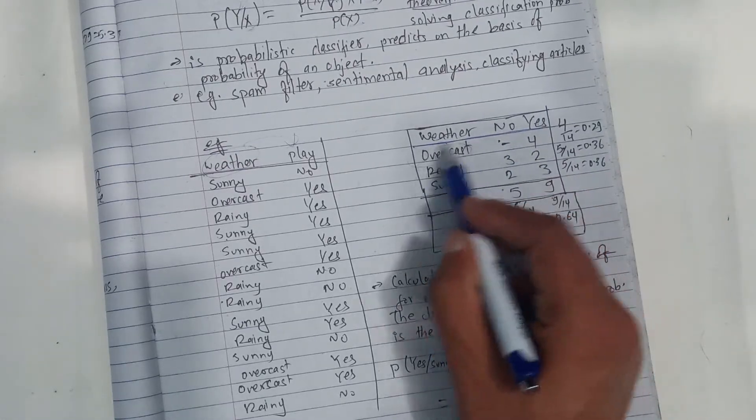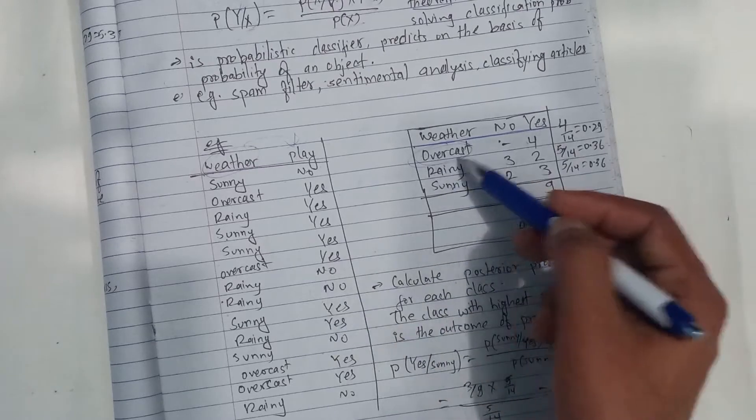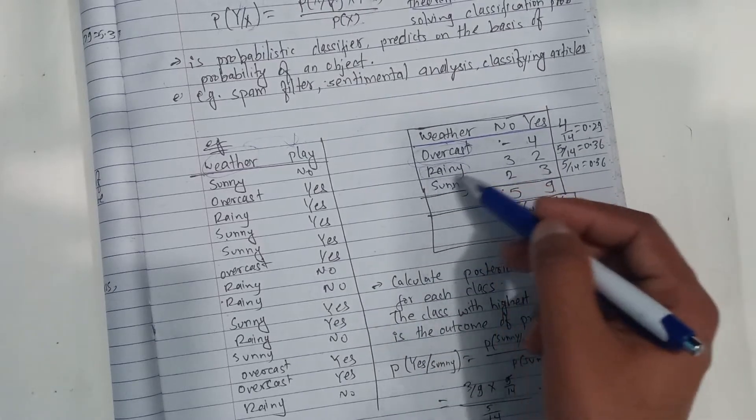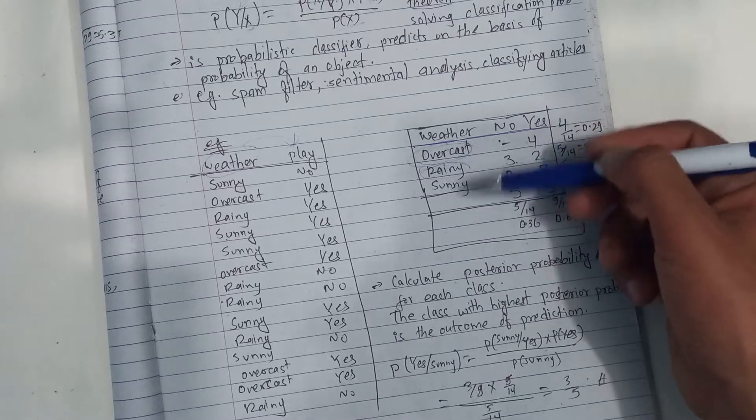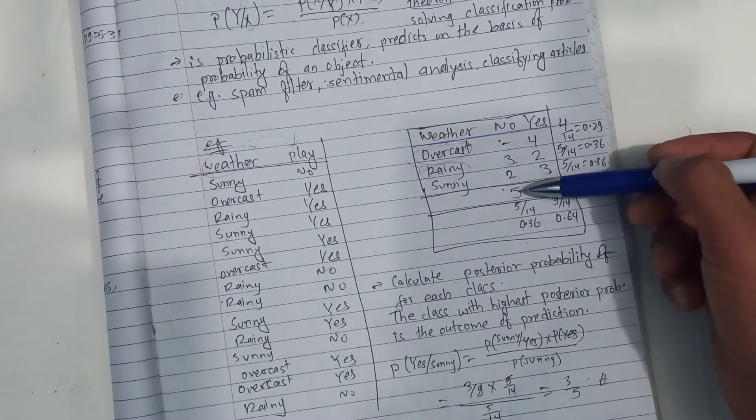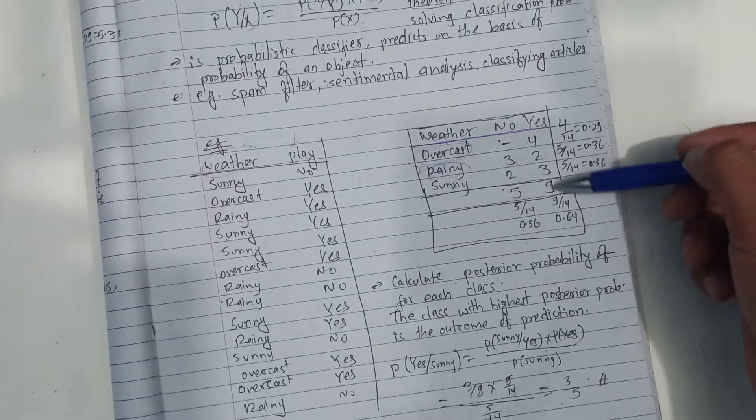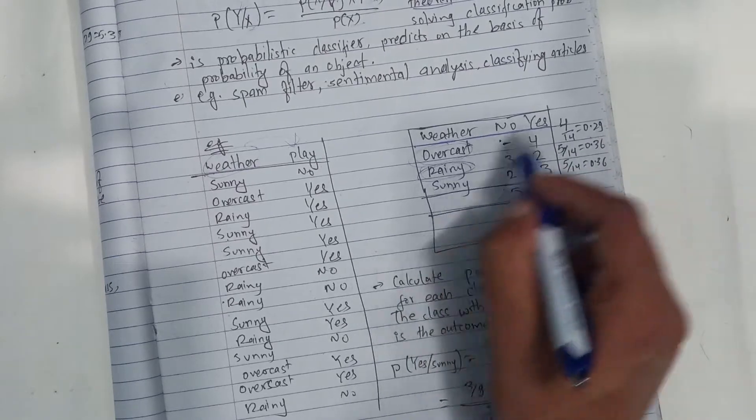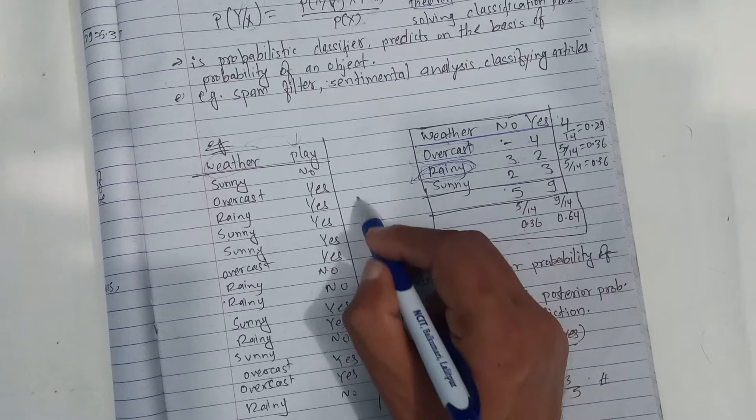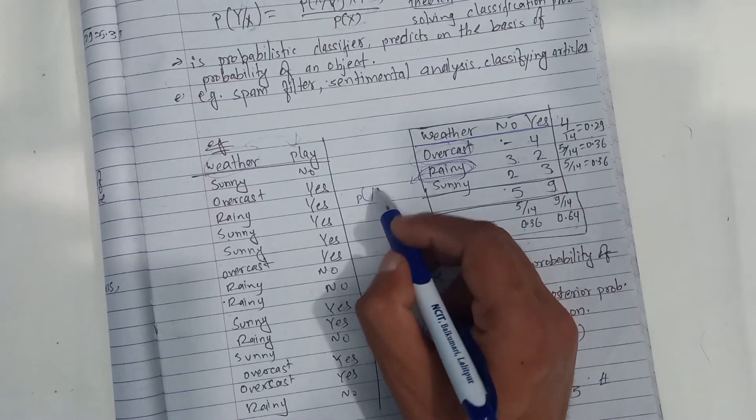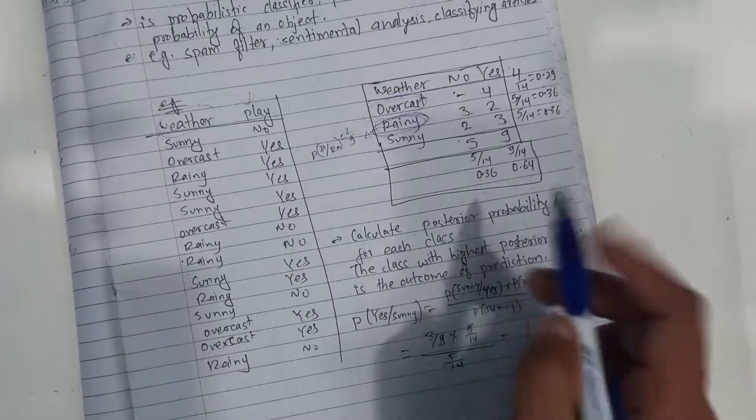The total events are 14. Overcast is 4 by 14, rain is 5 by 14, and sunny is 5 by 14. The total yes events are 9 by 14, and no events are 5 by 14. We calculate probabilities like 2 by 9 and 1 by 14.